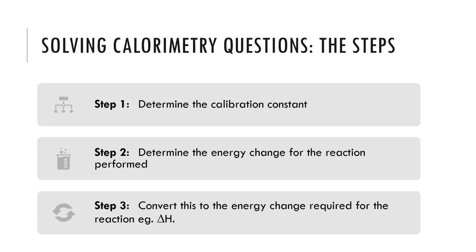When we solve calorimetry, always go by the steps. Step one: determine your calibration constant from data that is given. Step two: determine the energy change for the reaction by using the delta T and the calibration factor. Then convert this into the energy change required for the reaction, because the skill that VCAA is looking for is us to be able to write thermochemical equations with a stated delta H.